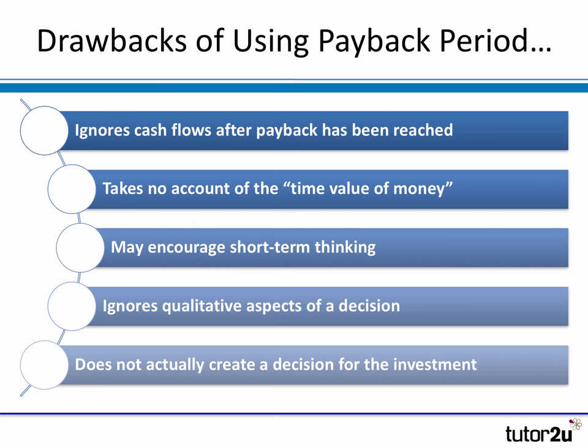Perhaps most importantly, the payback period completely ignores what happens after payback has been achieved. So what happens if that chocolate moulding machine keeps on making £200,000 net cash flow extra for the next 20 years? Great news, but it's irrelevant to the payback calculation, because we'd already calculated payback at three and a half years.